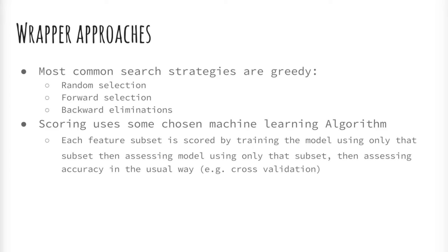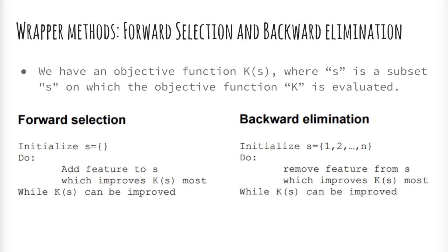When it comes to wrapper approaches for feature selection, most common search strategies are greedy: random selection, forward selection, and backward eliminations. Scoring uses some chosen machine learning algorithm where each feature subset is scored by training the model using only that subset, then assessing the model and assessing the accuracy in the usual way. In wrapper methods, learning algorithms are used as a black box, computing the objective function. Then the search is done. An exhaustive search is expensive. For n features, we have 2 to the n possible subsets. Backward elimination tends to find better models, better at finding models with interacting features. But it is frequently too expensive to fit the larger models at the beginning of a search. Although greedy searches are common and effective, both can be too greedy.